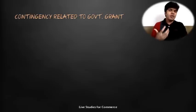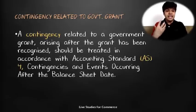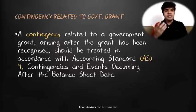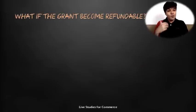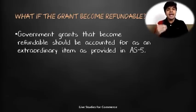If a contingency related to a government grant arises after the grant has been recognized, it should be treated in accordance with Accounting Standard 4, i.e., Contingencies and Events Occurring After the Balance Sheet Date. An important and interesting point in AS 12 is: what if the government grant becomes refundable? Government grants that become refundable should be accounted for as an extraordinary item as per Accounting Standard 5.